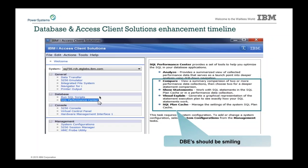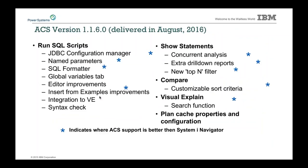Analyze, compare, show statements, visual explain, SQL plan cache — a lot of functionality has been included in ACS in this space, and we're continuing to add more. Under Run SQL Scripts we continue to add more features: JDBC configuration manager, named parameters, SQL formatter, global variables, editor improvements, insert from examples, integration into Visual Explain, and syntax verification.